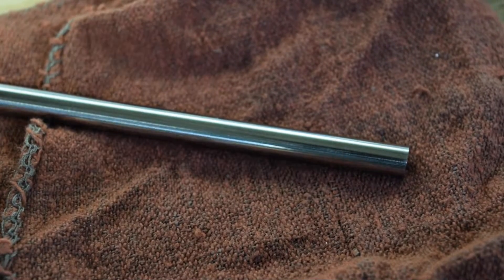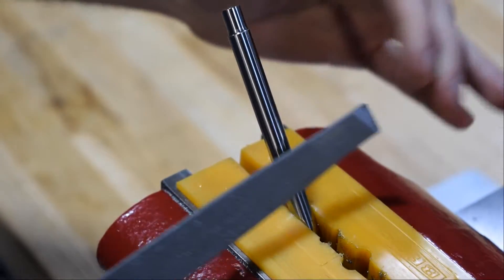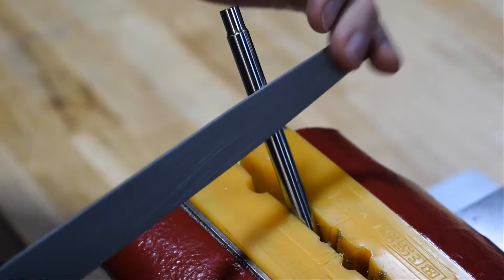Before going straight for the ball screw, we wanted to do some practice. This is a high-speed steel drill rod, and it's pretty tough. It's hardened to about 65 Rockwell C, and the file can't even touch it.